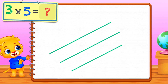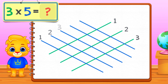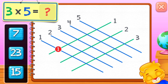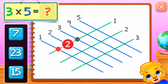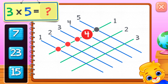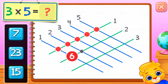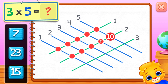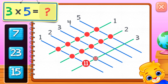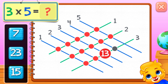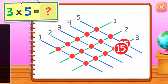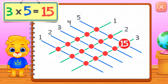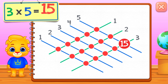Three times five equals — one, two, three, four, five, six, seven, eight, nine, ten, eleven, twelve, thirteen, fourteen, fifteen. Three times five equals fifteen.